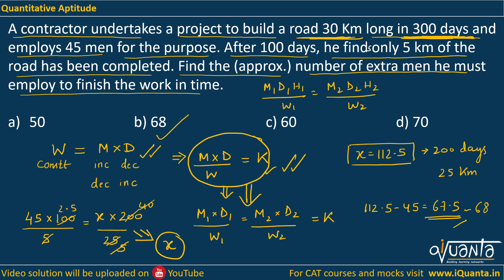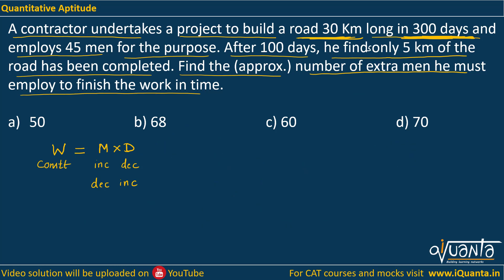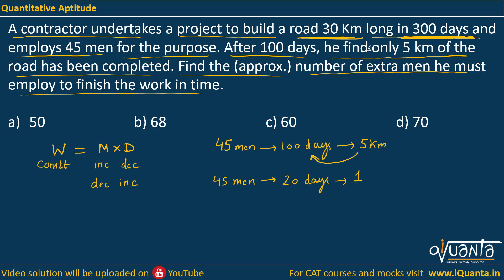This approach is through the relations. Some people might want another solution — through the number of man-days — so let us discuss that as well. We were given that 45 men were employed, they worked for 100 days, and they were able to build 5 kilometers of the road. In how many days will they build 1 kilometer? That would be 100 / 5 = 20 days. So if 45 men work for 20 days they'll be able to build 1 kilometer of road — that means 45 × 20 man-days equals 1 kilometer of road.